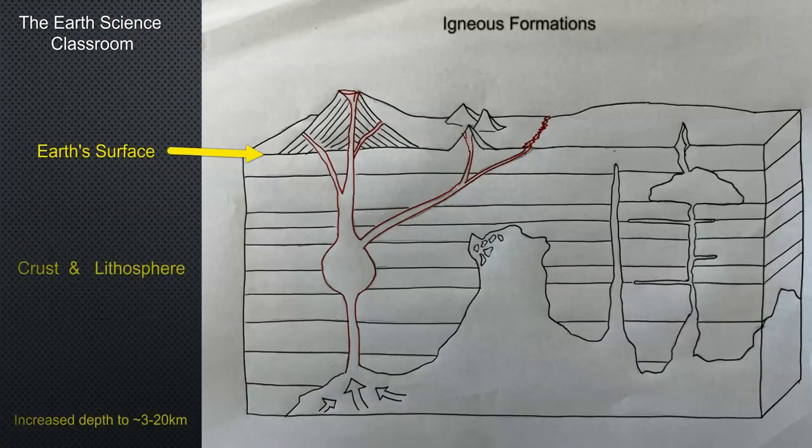We have this diagram here looking at both the surface conditions and landscapes and also underground in the crust and lithosphere. From the surface down to about 20 to 30 kilometers, and this can depend on location based on continental crust or oceanic crust.